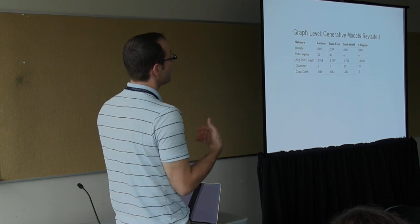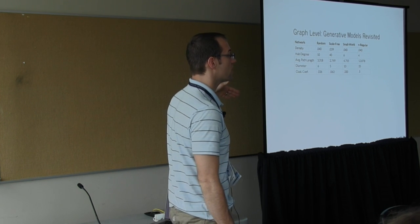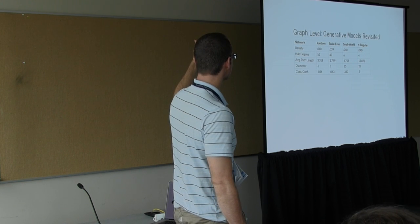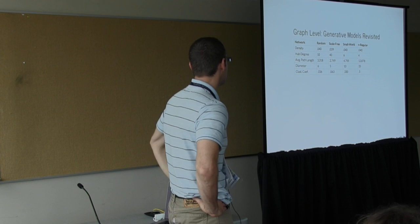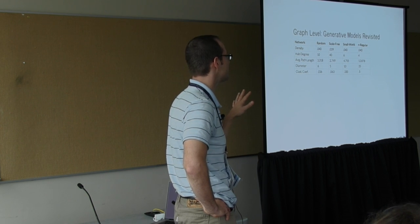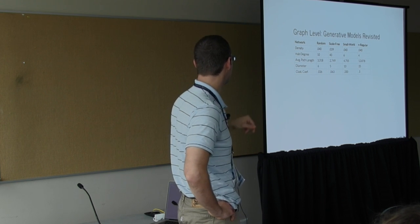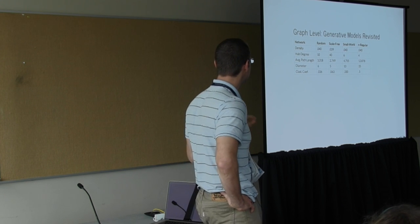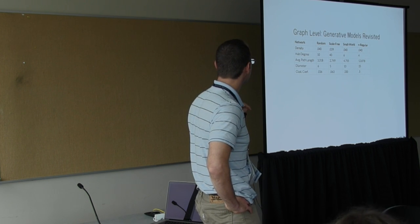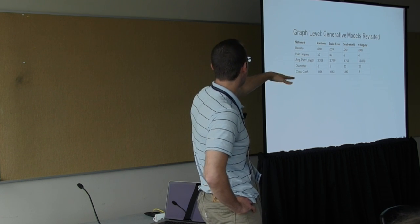To revisit the generative models that I presented, this is what all those statistics look like for the run up above of those models. All those models I purposely made such that they had the same number of nodes and the same number of connections roughly. Some of them are probabilistic and there's a little flex around that. So you'll look at the statistics for the density, and in the random, small world, regular, all have 0.04. And then scale free is just a little off.